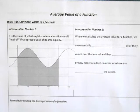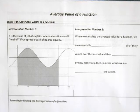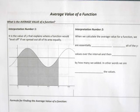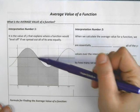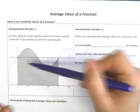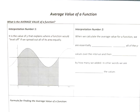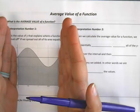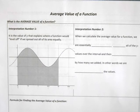There are really two big ways to interpret the average value of a function. The first interpretation is that it is the value of y that explains where a function would level off if we spread out all of its area equally. If we counted all of the area enclosed between this curve and the x-axis and spread it out equally over this distance, the average value would be the height.